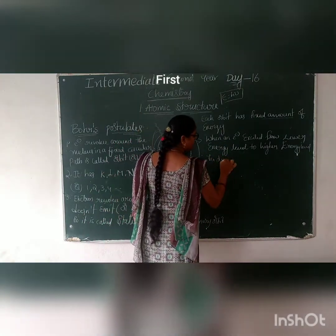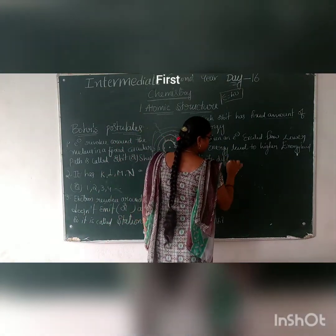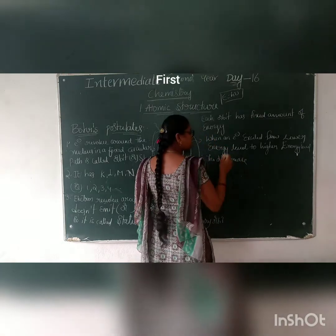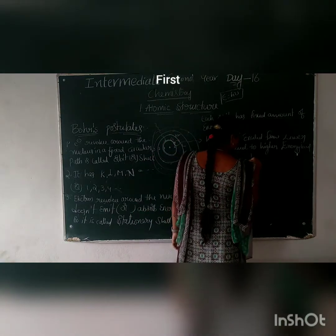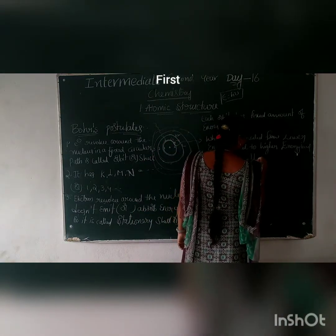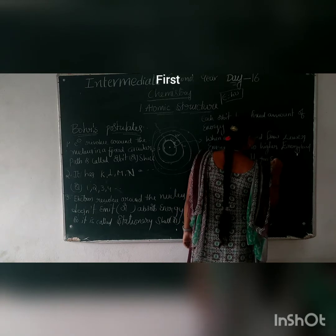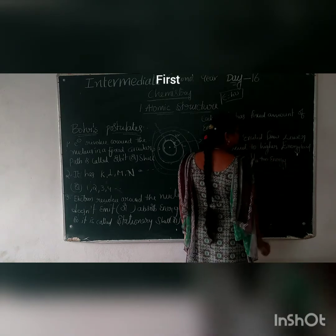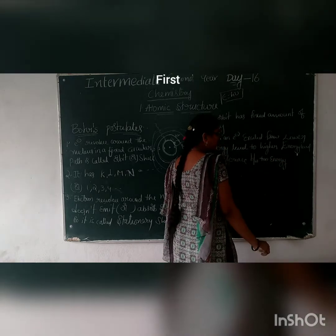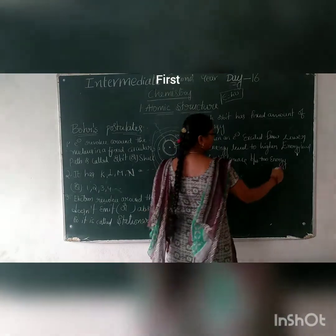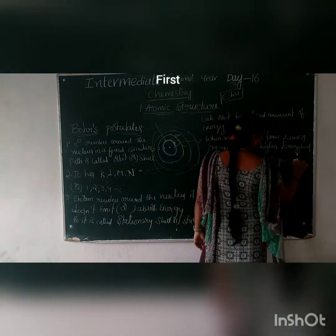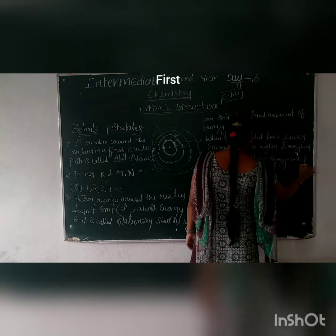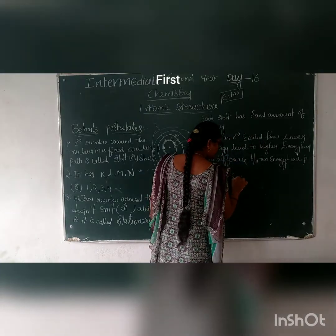Now, the difference between two energy levels — when we set this side, we are not going to set this side, we are not going to set the area. Then the difference between two energy levels is E2 minus E1.